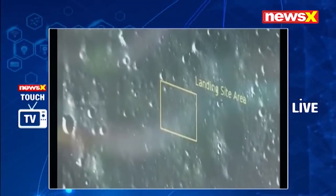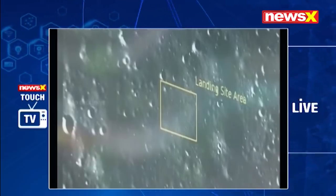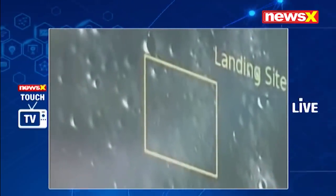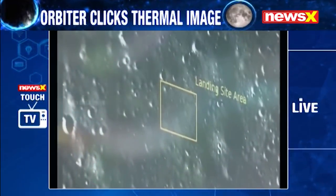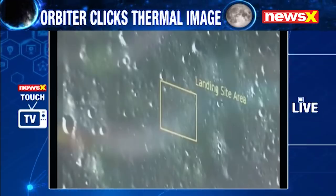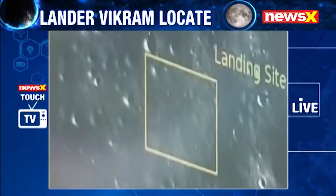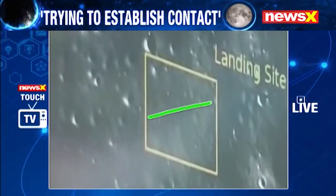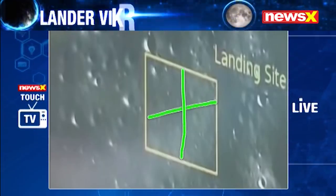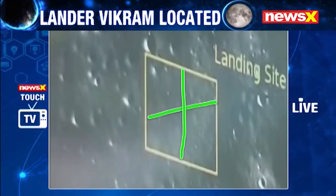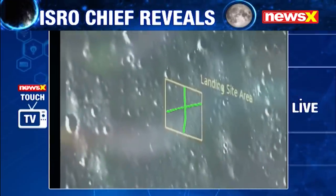When Vikram the lander had separated from the orbiter, the plan was — after completing two maneuvers around the moon — it would start scanning its landing area. The pictures on your screen right now show the landing site area demarcated for Vikram. This is roughly the 10 square kilometer area where Vikram the lander was supposed to land.